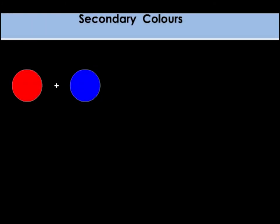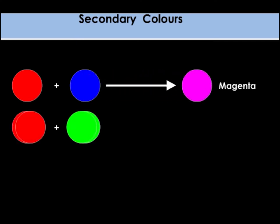Secondary colours of light are formed when two primary colours are combined with equal intensities. Red and blue lights will form magenta.